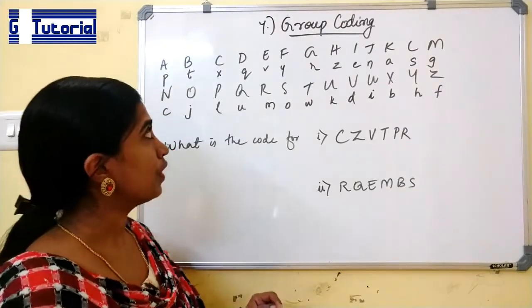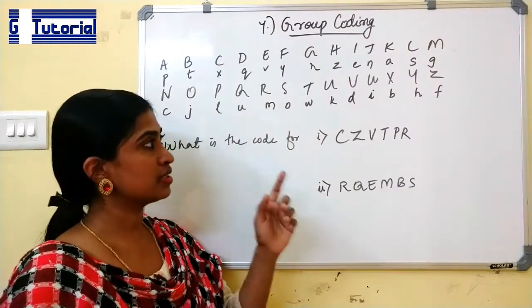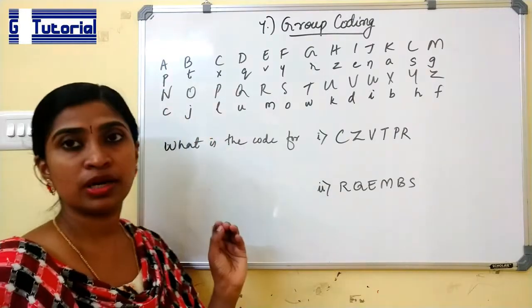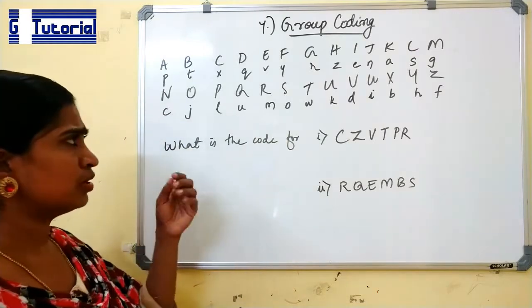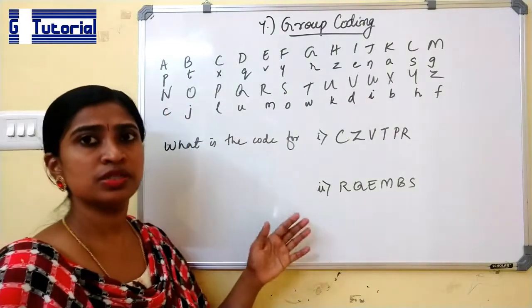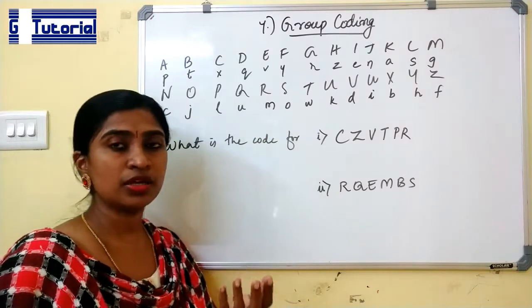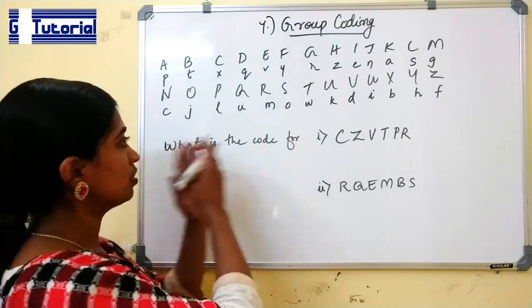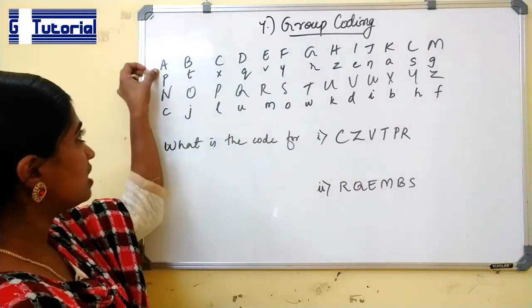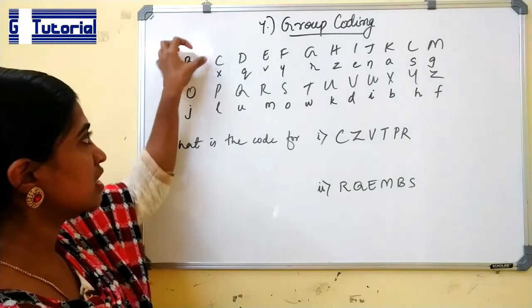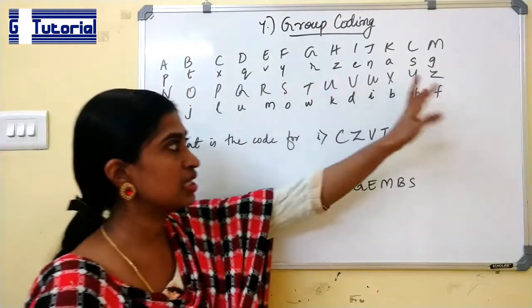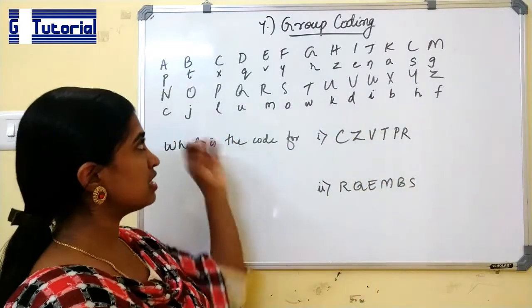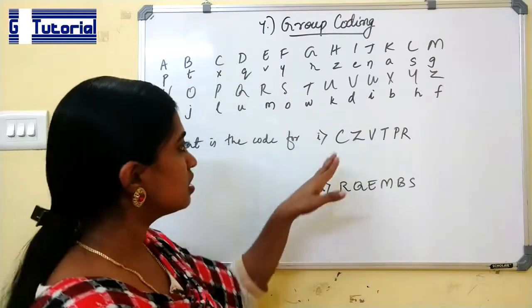Next type is group coding. Here each of the capital letters of the English alphabet series is coded by a small letter. So this is a code. For this question, this is the code. For another question, some other code will be there. This is not actually the rule. So here A is coded as small B, B is coded as T, C is coded as small X. Similarly, Z is coded as F. So you have to find the code for CZBDPR.